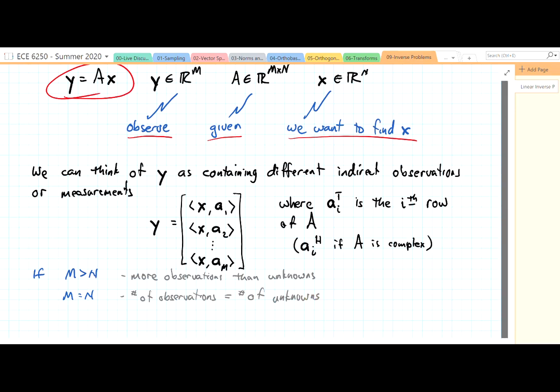And finally, if m is less than n, we have fewer observations than unknowns.